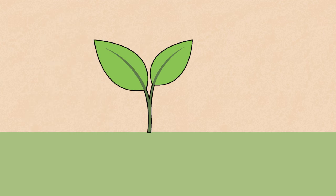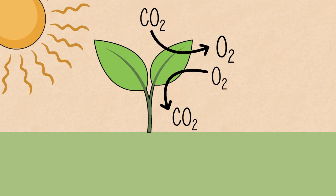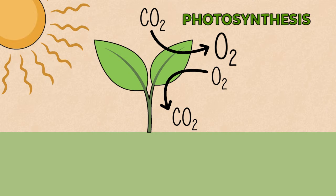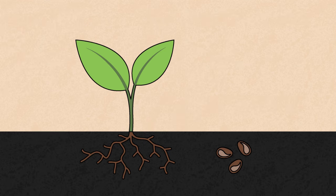Plants also respire, but you only notice it in the dark because in the sunlight they release more oxygen from photosynthesis than they use in respiration. But think of the roots and seeds which are hidden from the sun.